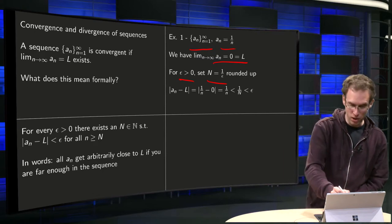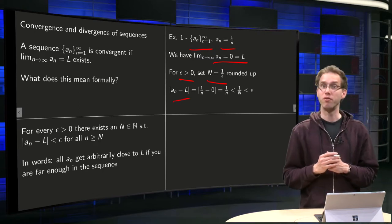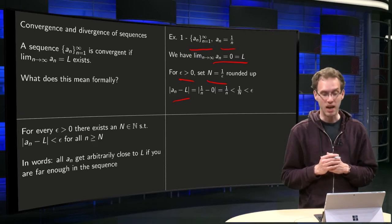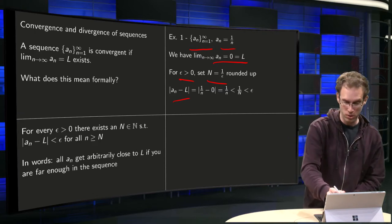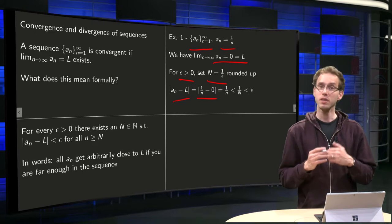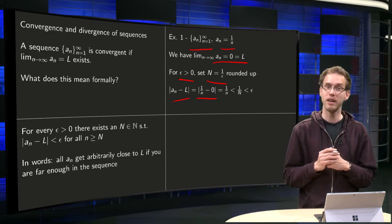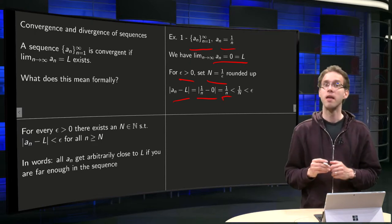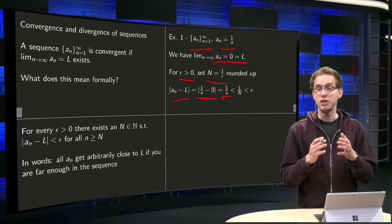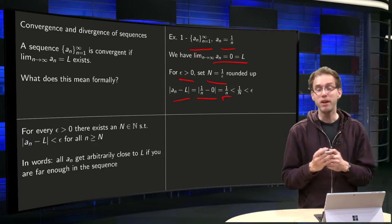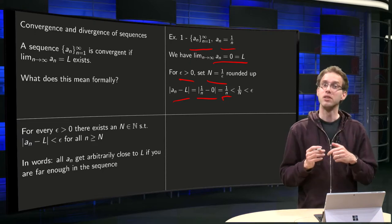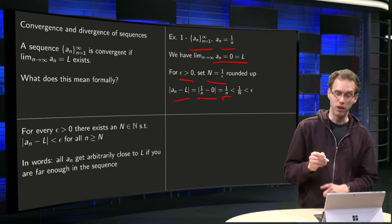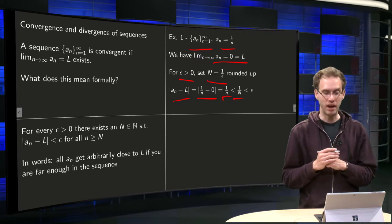And what happens then? Well, our absolute value of a_n minus L—a_n equals 1 over n, L equals 0—so absolute value of 1 over n. Well, all our n's are positive, so that equals 1 over n.